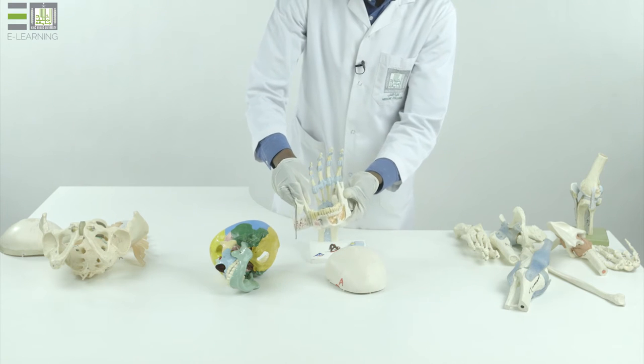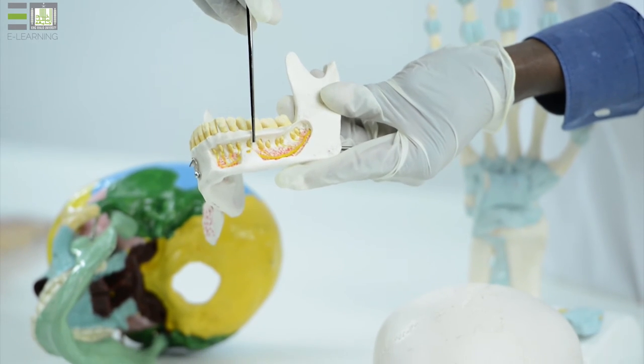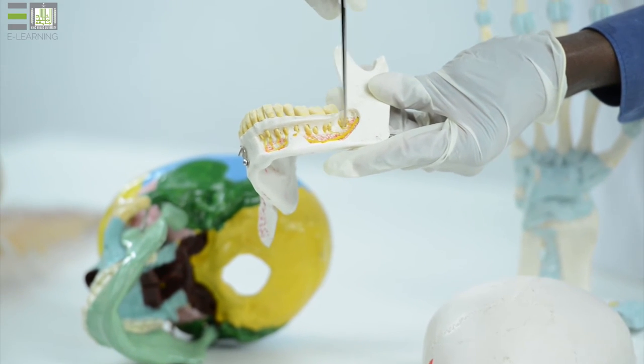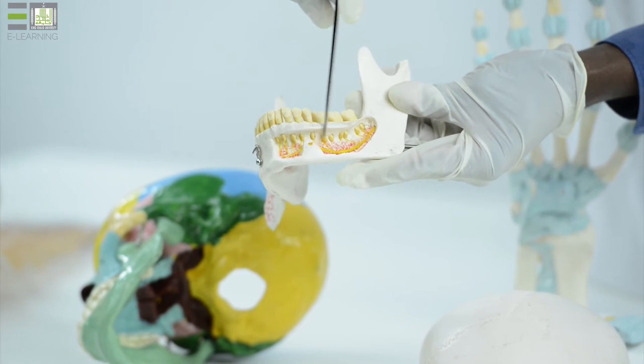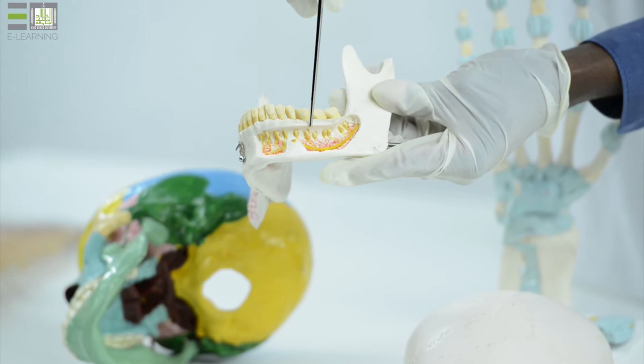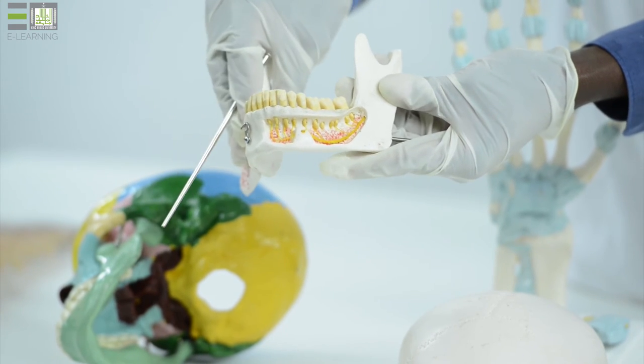The second type is present between the teeth and their sockets within the upper and lower jaw. This type is called gomphosis, a type of fibrous joint.